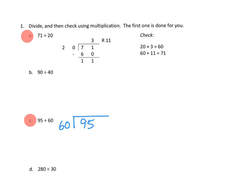But I don't think we can do two, right? Two groups of 60 would be, two times 60 would be 120, and that's already bigger than 95.